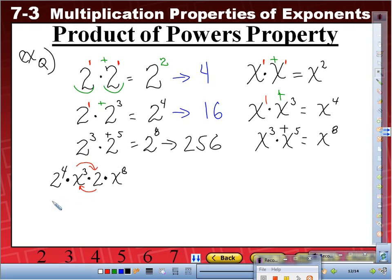So this becomes 2 to the 4th times, and I'm going to add my 1 right here just so I won't forget, times 2 to the 1st times x cubed times x to the 8th. Now let's use associative property, these two and these two.